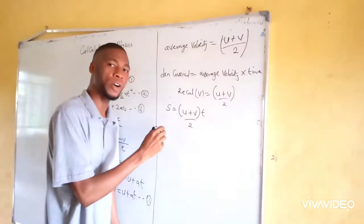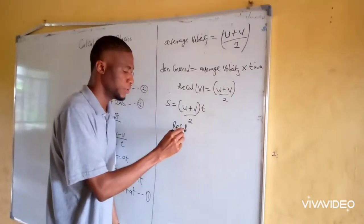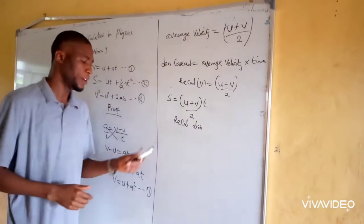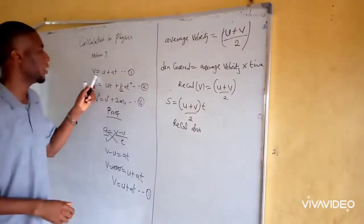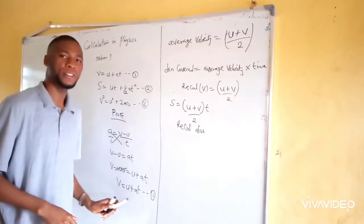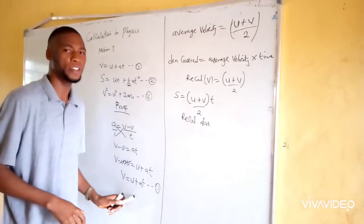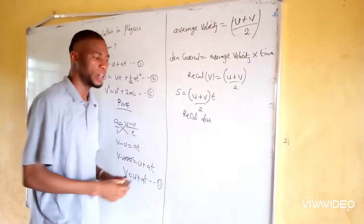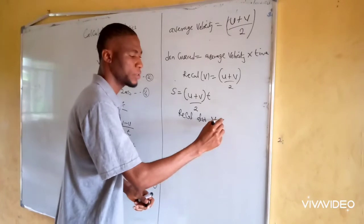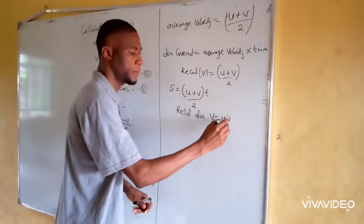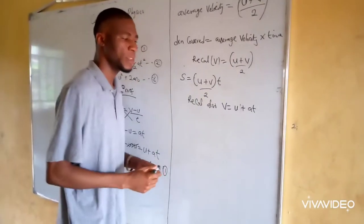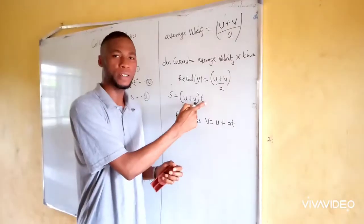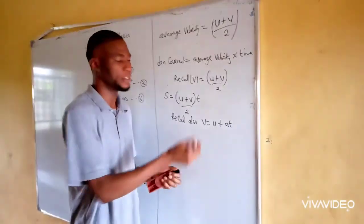Recall from our equation one that velocity v equals initial velocity u plus a times t. Let's name this as equation one, and the distance formula as equation two.